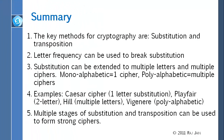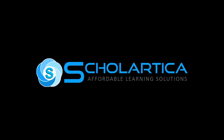That brings us to the end of this chapter. The key messages are: remember the two main methods — substitution and transposition. Letter frequency is a major point of attack, as people can count letters in the English alphabet. Substitution can be extended to multiple letters and multiple ciphers (multiple alphabets). We saw examples of Caesar cipher, Playfair, Hill, and Vigenère. You can have multiple stages of these to make strong ciphers, which we will cover when we discuss DES and AES.